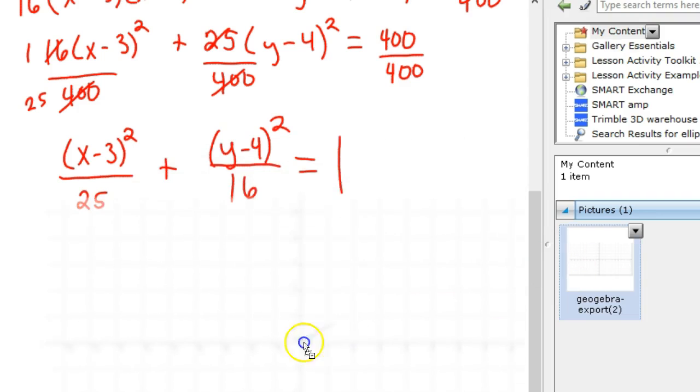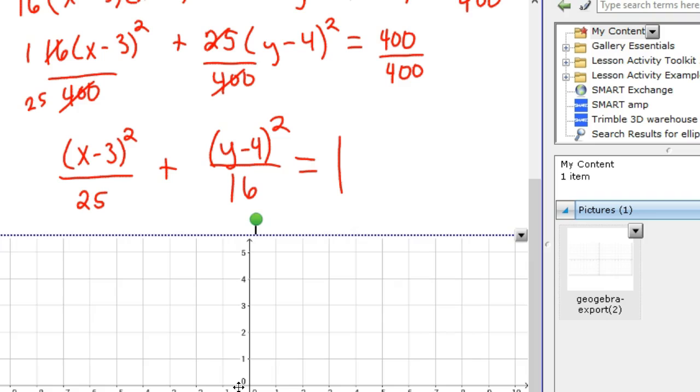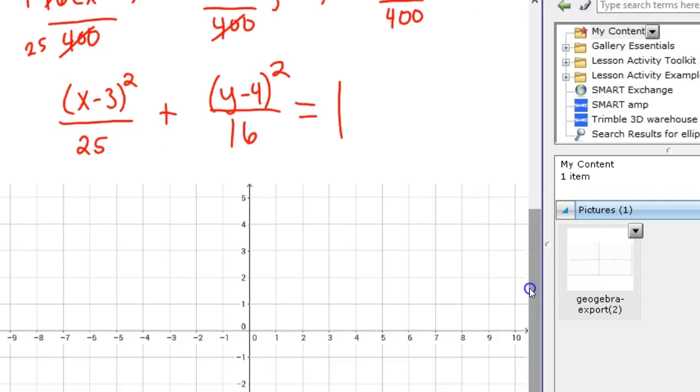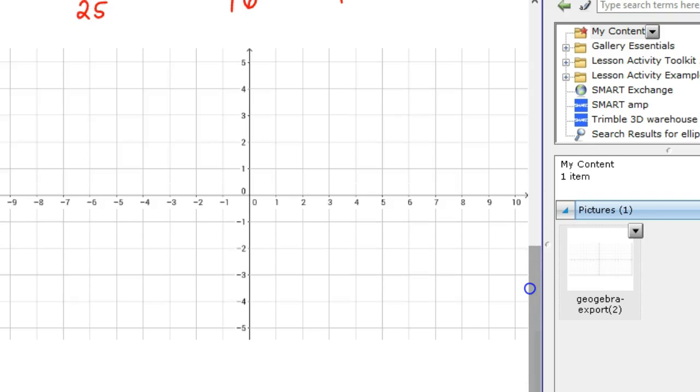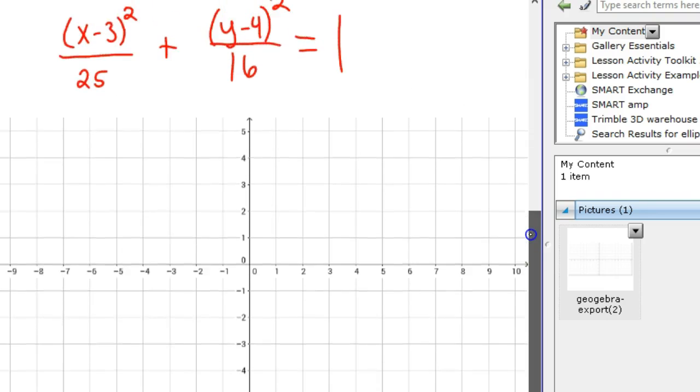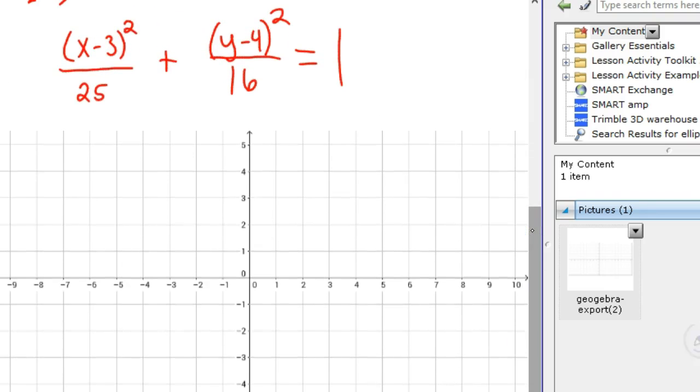So let me pull in some graph paper, and we'll just give it a shot. So to start with your center, your center again is positive 3, positive 4. So 1, 2, 3, 1, 2, 3, 4. There's your center.